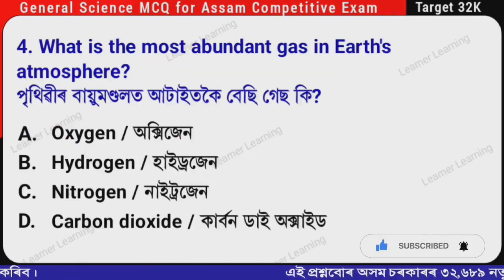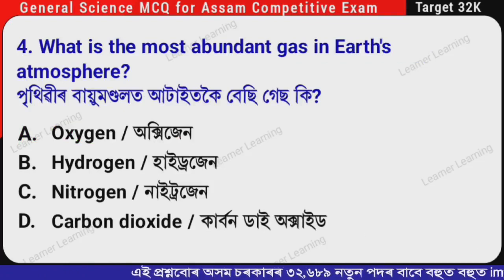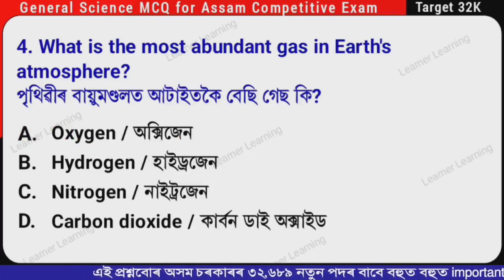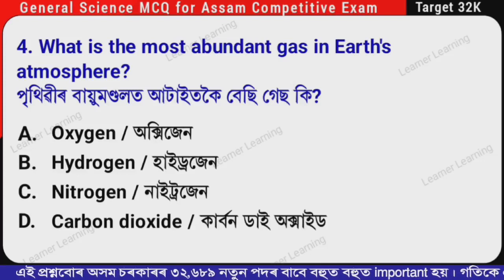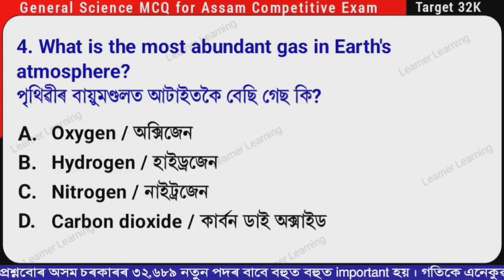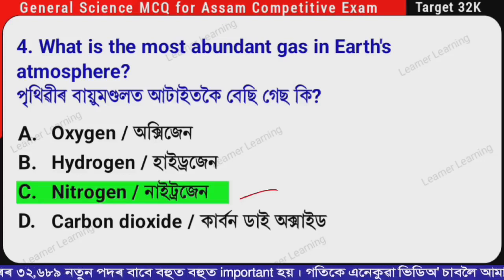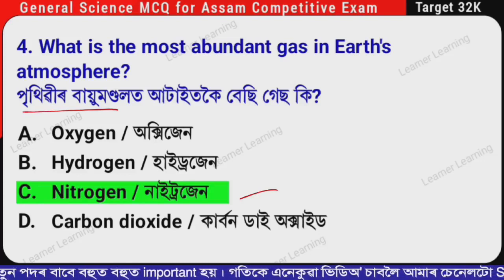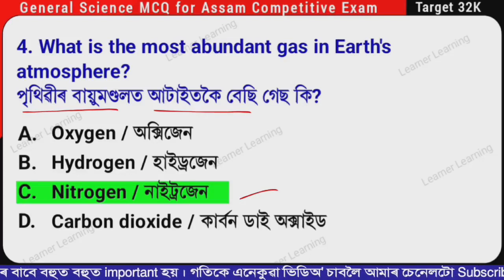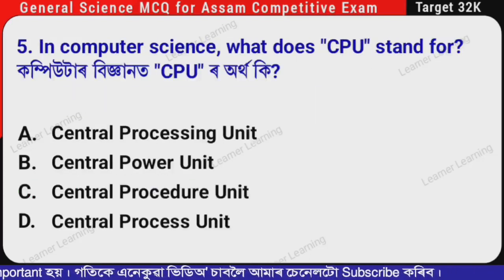Next question: What is the most abundant gas in Earth's atmosphere? (Assamese: Pithibir baiyumondolat atait koi beshi gas ki?) The correct option is Option C — Nitrogen. The most abundant gas in Earth's atmosphere is Nitrogen. Remember this.